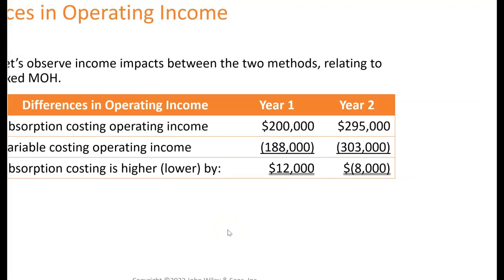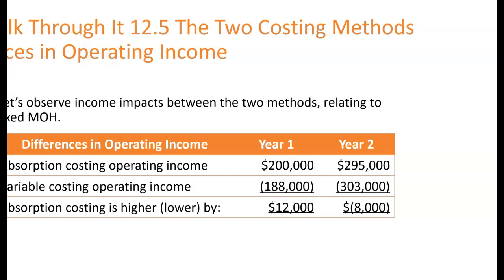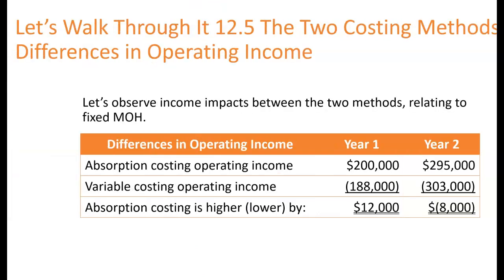Here's a summary: absorption costing income versus variable costing income — the difference between the two is $12,000 in year one and $8,000 in year two. This is because fixed manufacturing overhead increases absorption income when it's stored in inventory, and then decreases income when it comes out of inventory and goes into cost of goods sold.